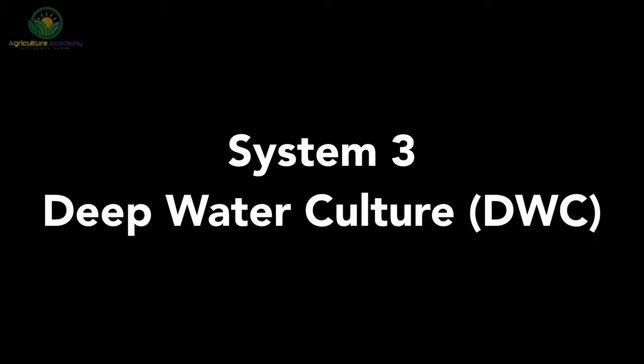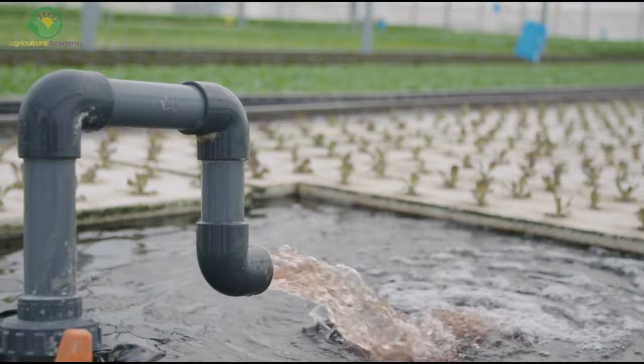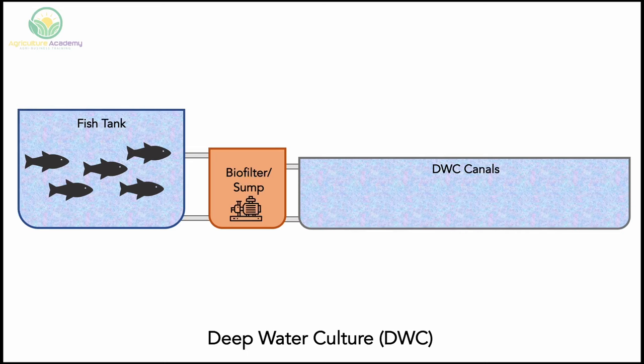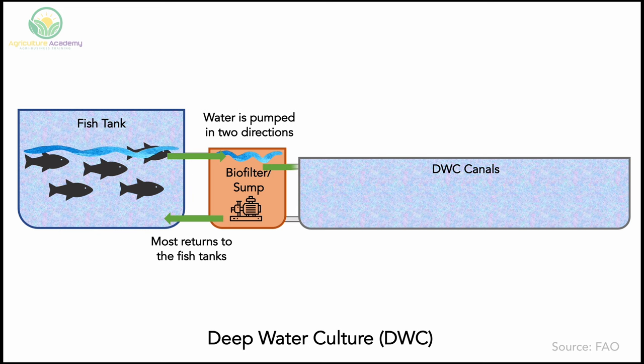Deep water culture systems are a great option for large-scale aquaponic operations. These systems can be a bit more complicated than the NFT and ebb and flow systems. The water levels in the fish tank overflow and enter the biofilter tank. From here, the water is pumped in two directions — most of the water will return to the fish tank while the rest is pumped into the deep water culture canals.